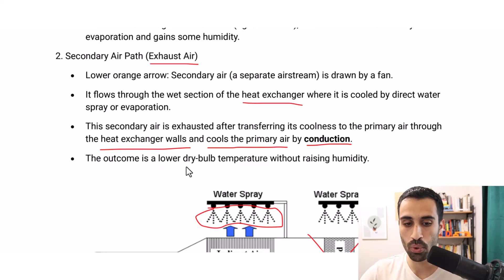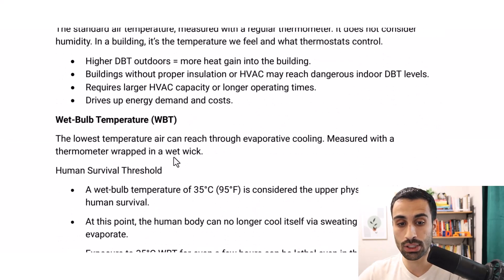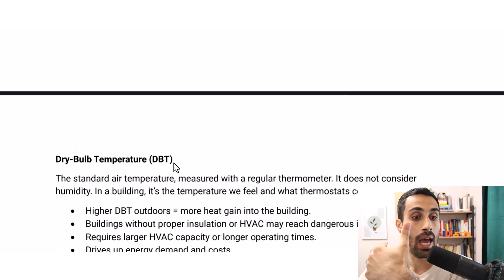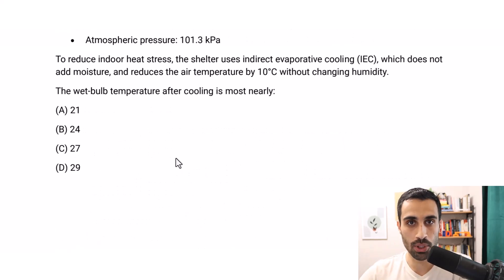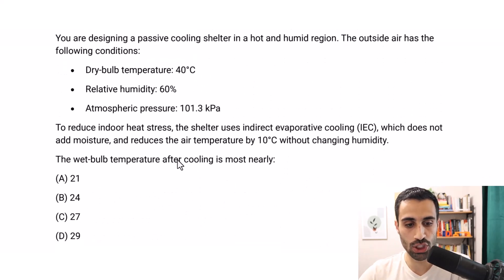The outcome is a lower dry bulb temperature without raising humidity. And if we have a lower dry bulb temperature, we're going to have a lower wet bulb temperature. And that's what we're finding in this problem. Let's solve this. Definitions are important to know the concept, get the context. And at the end, we have to get the numbers right when we solve computational problems.